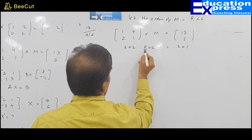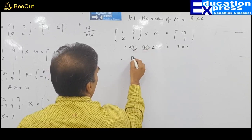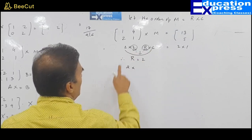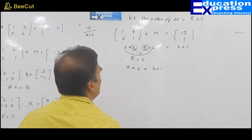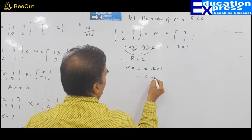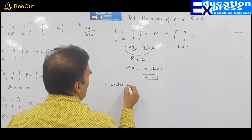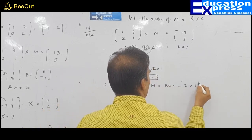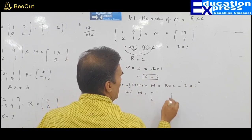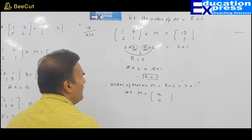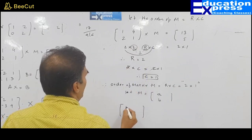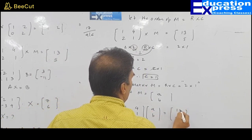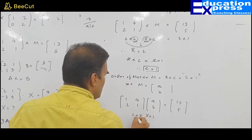For the multiplication to be possible, R should equal 2 because the inner dimensions must match. The product of the extremes — 2 into C — should equal the order of the resulting matrix, 2 into 1. So 2 cancels, therefore number of columns is 1. Therefore the order of matrix M is 2 into 1: 2 rows and 1 single column. Now substitute this over here: 1, 4, 2, 1 times [A, B] gives 13 and 5. The order is 2×2 times 2×1, resulting is 2×1.